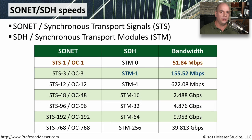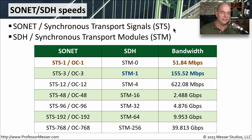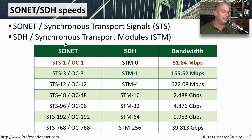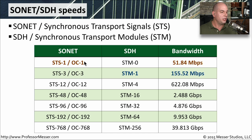The speeds of a SONET network are calculated and described as synchronous transport signals, or STS. You might also see this referred to as optical carrier numbers as well. The speeds for an SDH network are described as synchronous transport modules, or STM. And to confuse things even further, it's a different numbering mechanism for STS than you might use for STM.